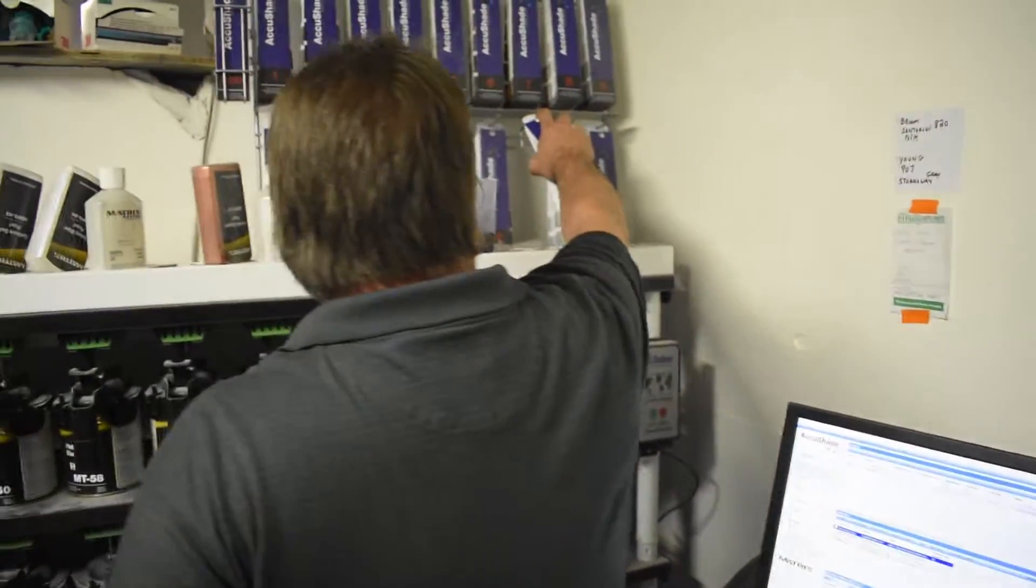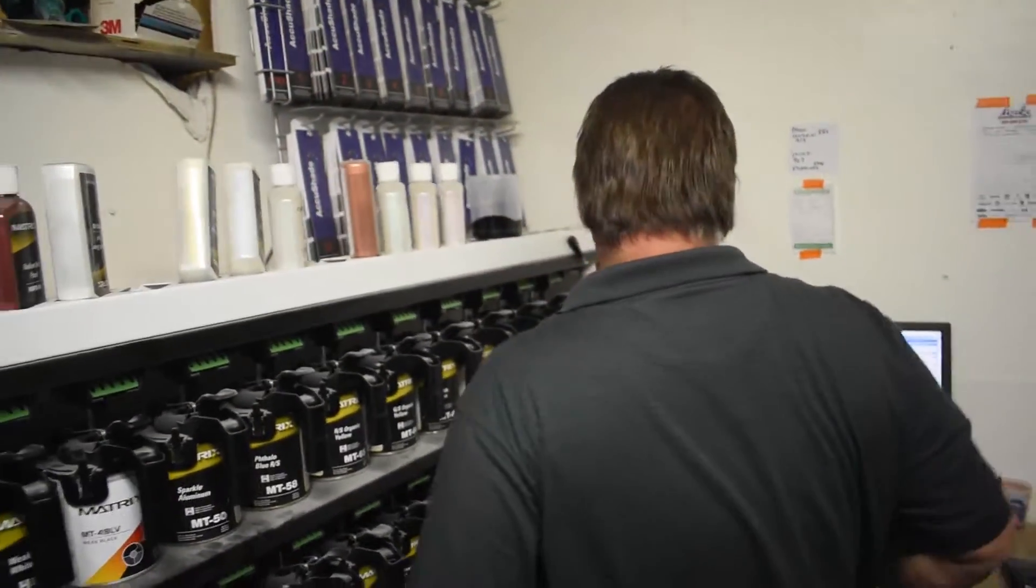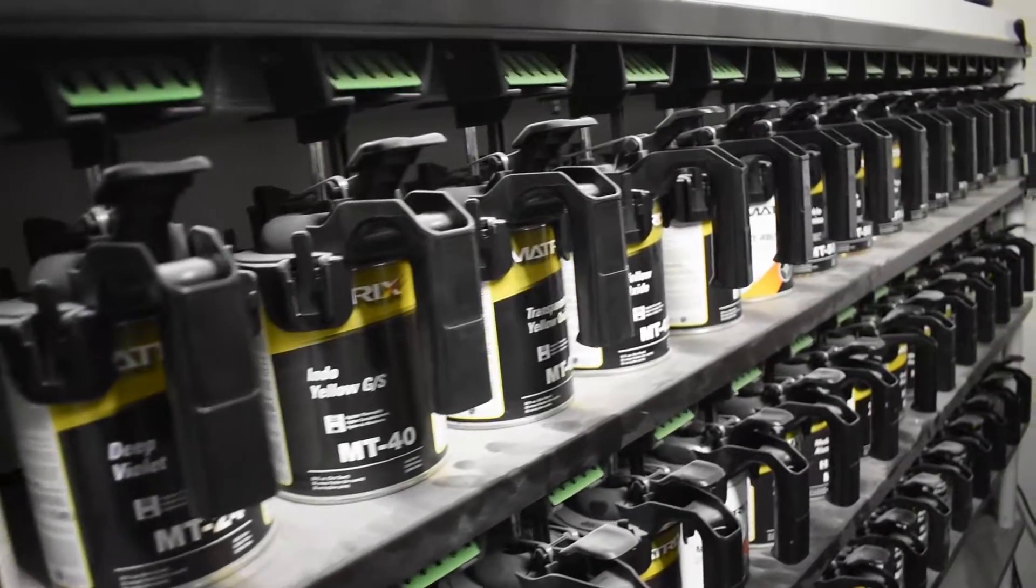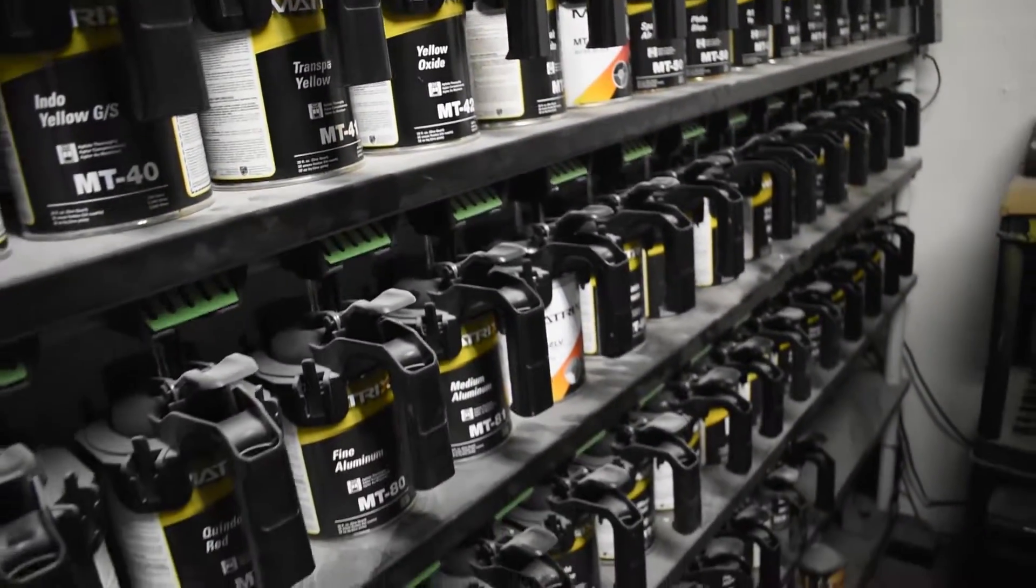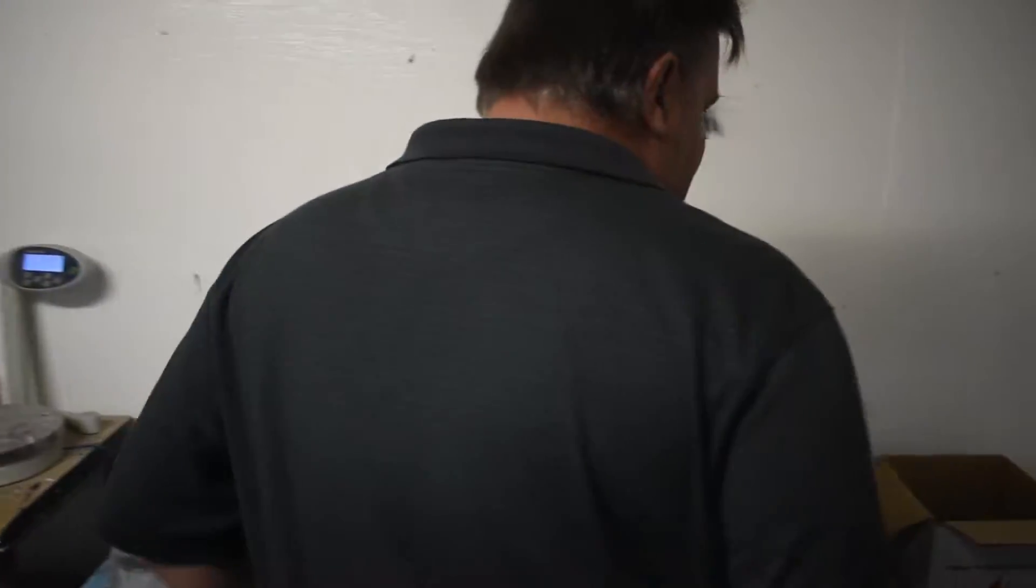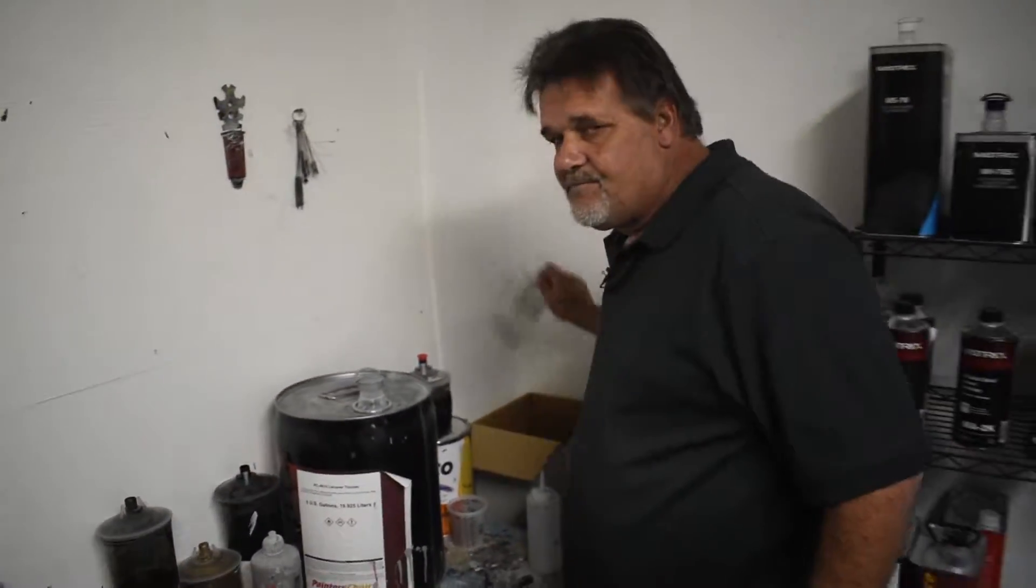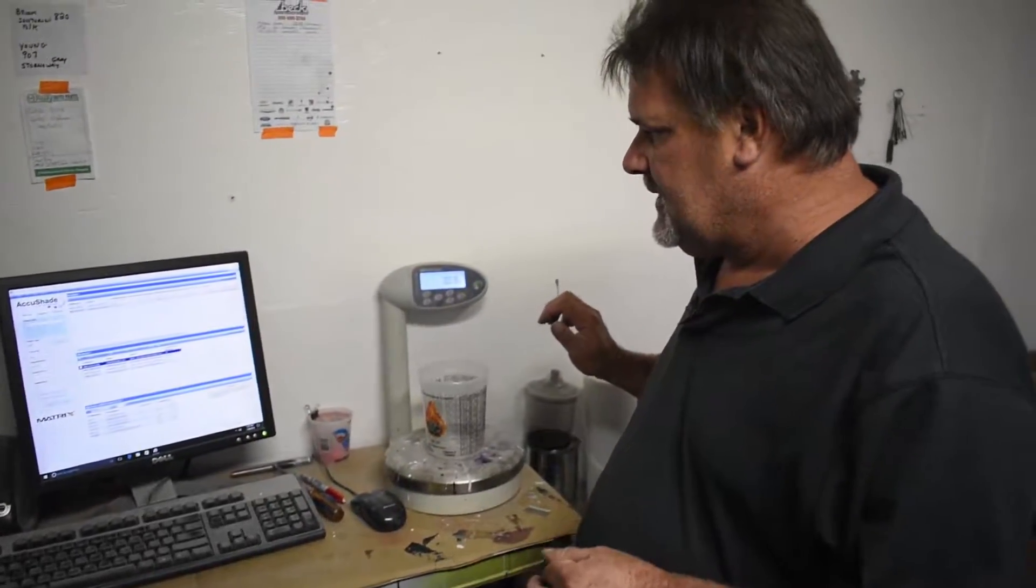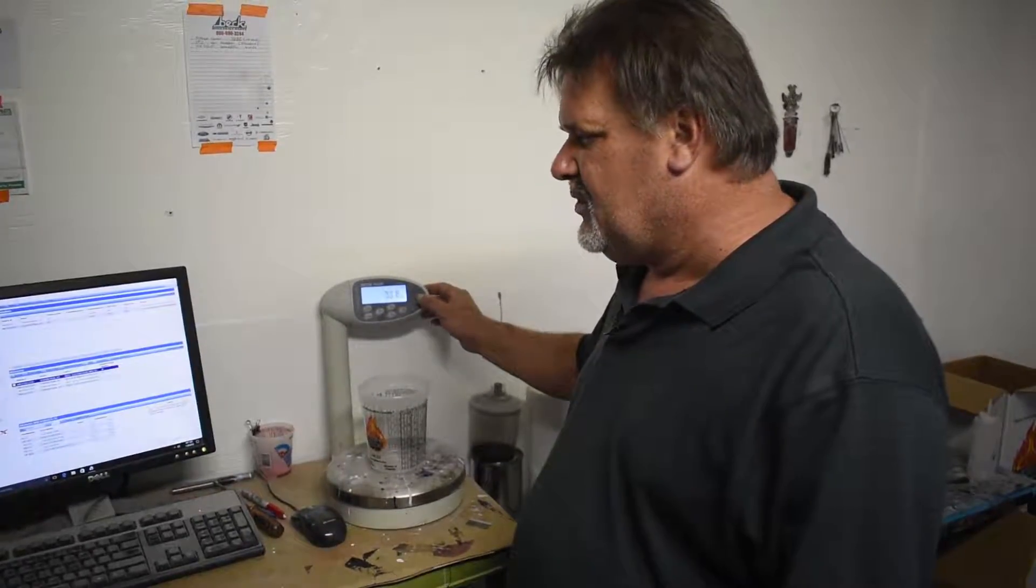Once we've selected our correct paint code, we turn on our mixing bag. We let this run for 10-15 minutes to make sure that all of our toners are correctly stirred. Then at that point, we will take a mixing cup, set it on our scale, and zero our scale.